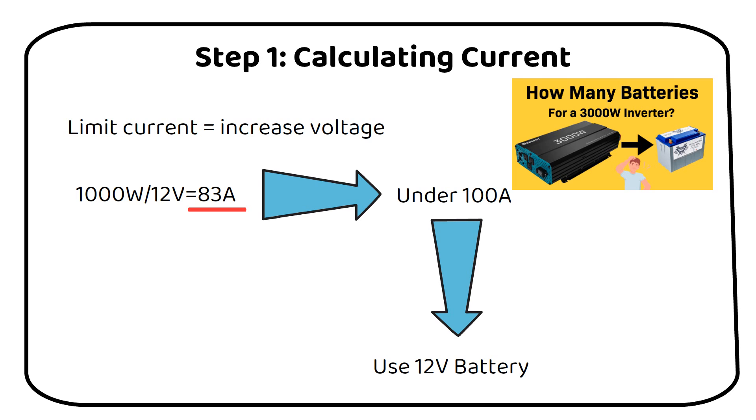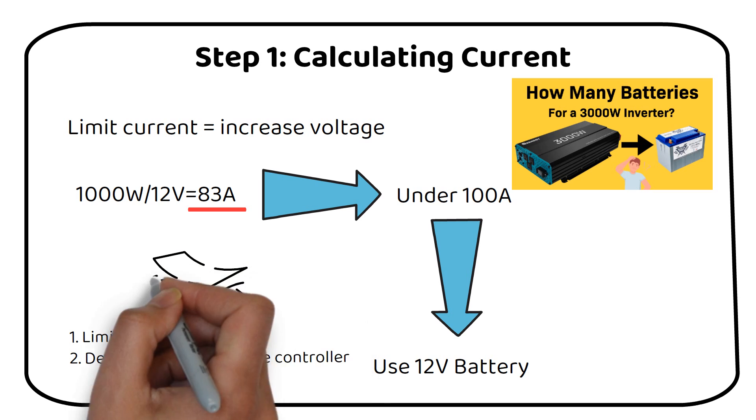The reason for limiting the current to 100 amps is to save costs on wiring and a charge controller. If you have many 12 volt appliances, like an RV, you can skip this step.